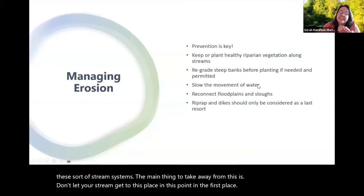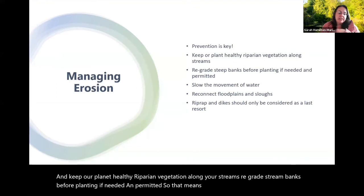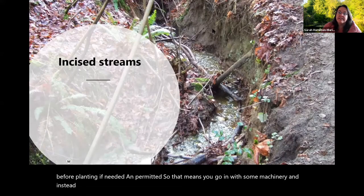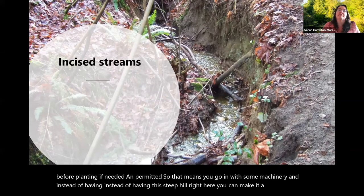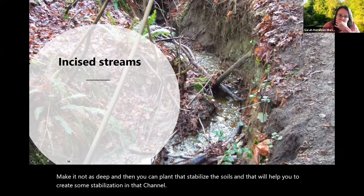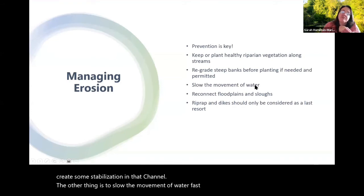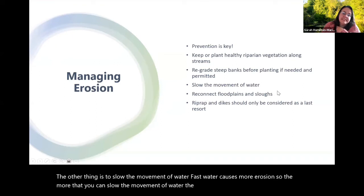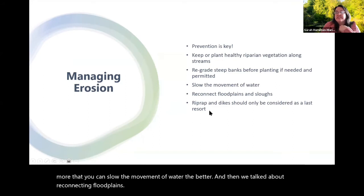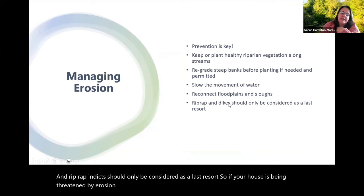The main takeaway is: don't let your stream get to that point in the first place. Prevention is key — keep or plant healthy riparian vegetation along your streams. Regrade stream banks before planting if needed and permitted, making steep areas less steep so you can plant to stabilize soils. Slow the movement of water, since fast water causes more erosion. Riprap and dikes should only be considered as a last resort — if your house is threatened by erosion — and they should always be engineered.